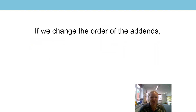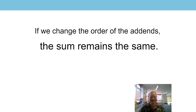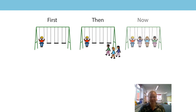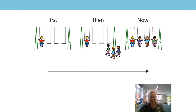In the last session you learned that if we change the order of the addends — can you finish that sentence for me? The sum remains the same. Well done. So let's give that a go. We're going to change the order of the addends. Here are my pictures, and now we're going to add the story. So our first addend here is three, then we add one, and now we have four. So there is our equation to go with our pictures.